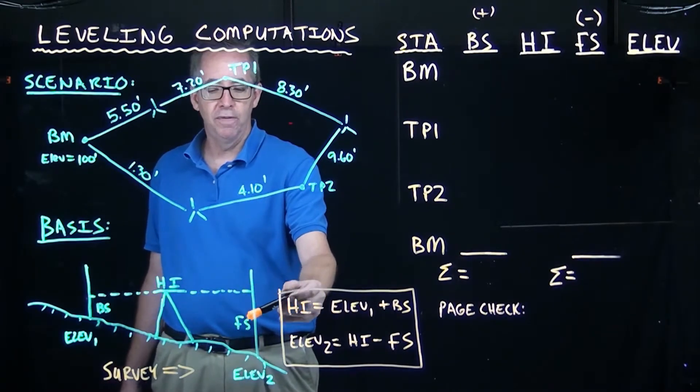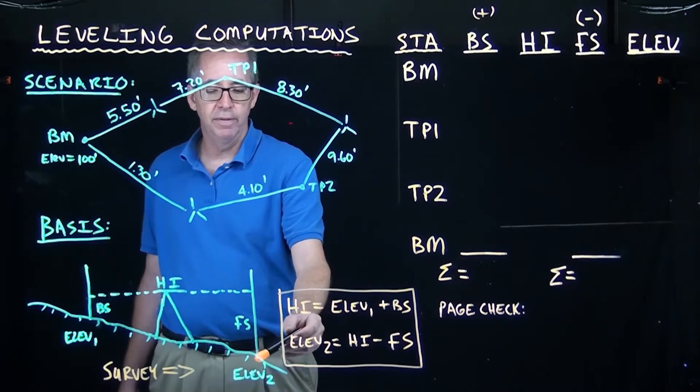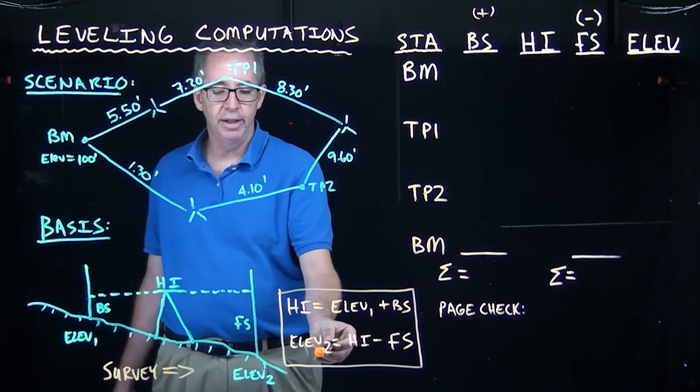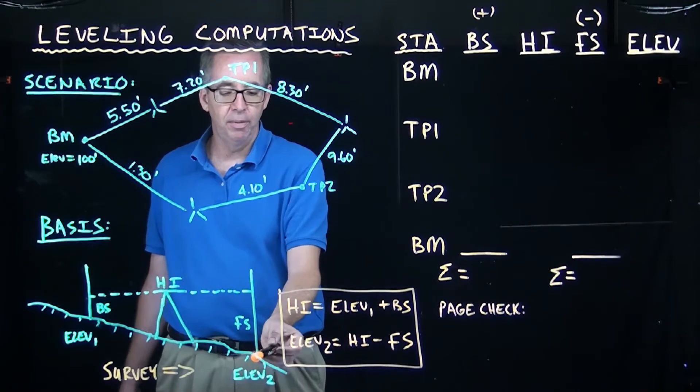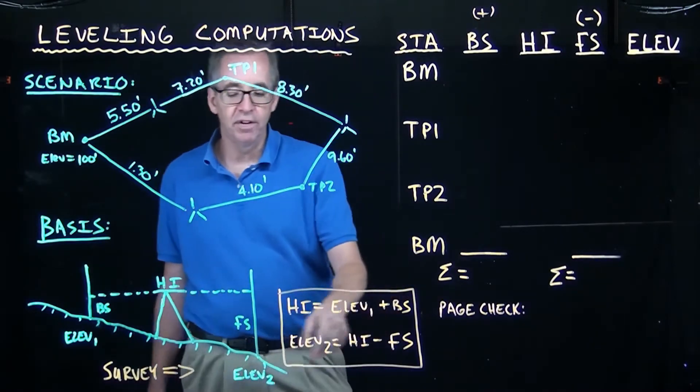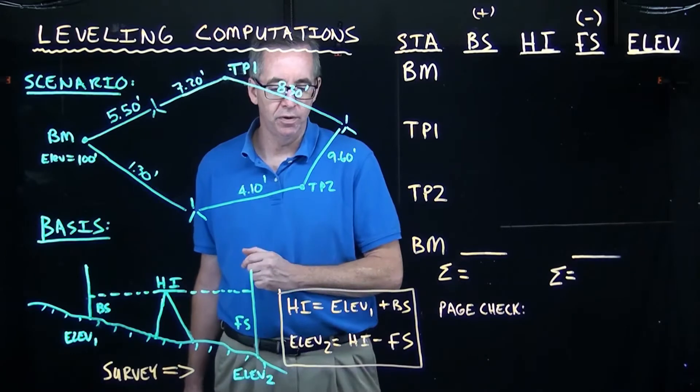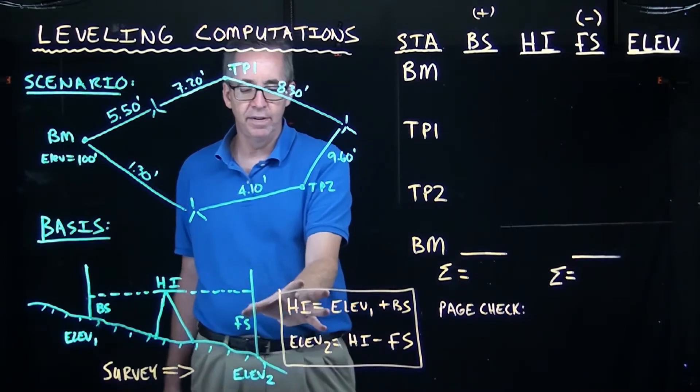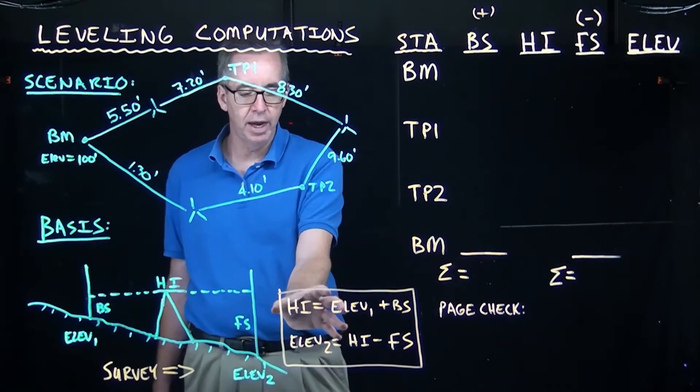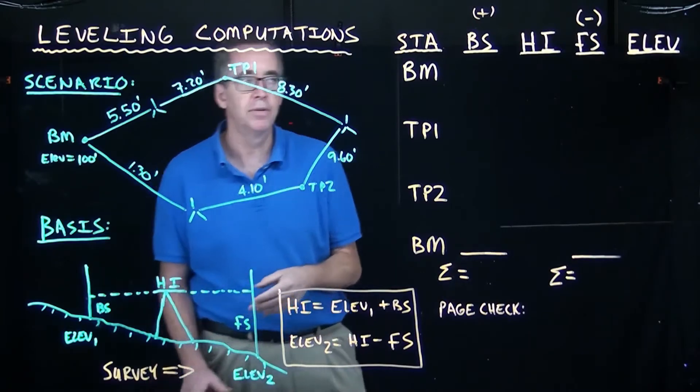If we subtract, then, our foresight, that would give us the new elevation. So that's the calculation that's shown here. The elevation of point two would be the difference between our height of instrument and the foresight. So this is the basis of the calculation. There really are only two calculations in a leveling exercise.